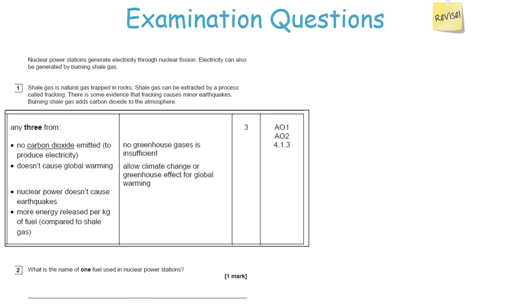It's very important you learn the advantages and disadvantages of all energy resources. Comparing nuclear against gas: no carbon dioxide is emitted in the nuclear process, so it won't contribute to global warming or climate change. Nuclear power doesn't cause earthquakes, unlike fracking. Finally, more energy is released per kilogram of fuel in the nuclear process compared to gas — you must quantify it per kilogram, not just say 'more energy.' The nuclear fuel is either uranium or plutonium.